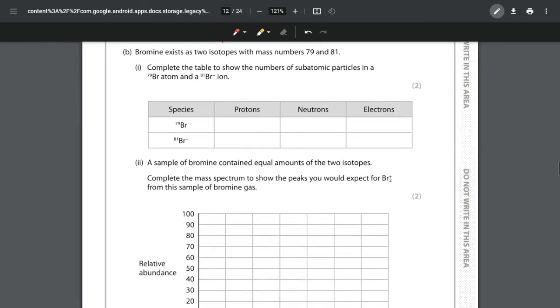For part B, we're looking at bromine existing as two isotopes with mass numbers of 79 and 81. We want to look at the numbers of subatomic particles, focusing on a ⁷⁹Br atom and an ⁸¹Br⁻ ion. Please do not be caught out by this—it is an ion.